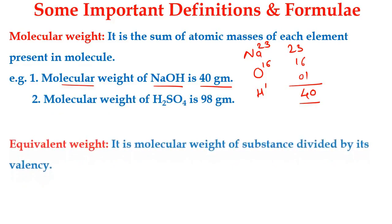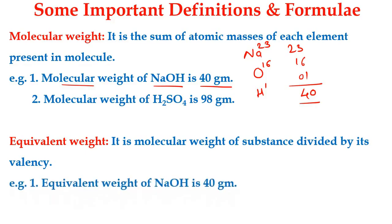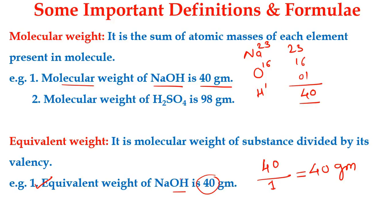The next definition is equivalent weight: it is the molecular weight of a substance divided by its valency. The equivalent weight of sodium hydroxide is 40 grams. Since NaOH has one OH group, its basicity (valency) is 1, so 40 divided by 1 equals 40 grams. Thus the equivalent weight and molecular weight of sodium hydroxide are the same.